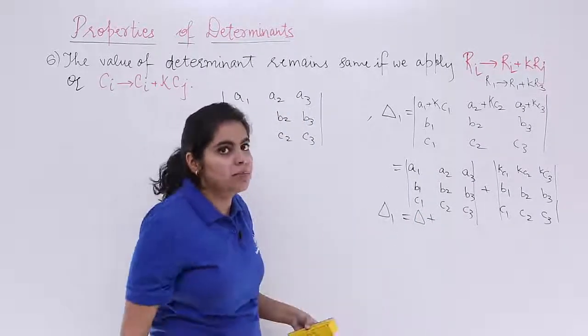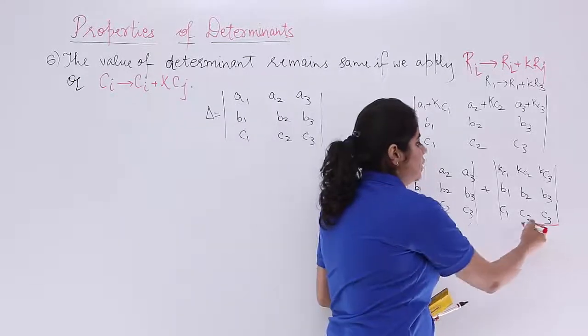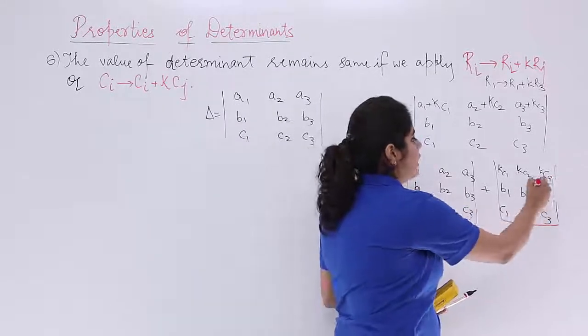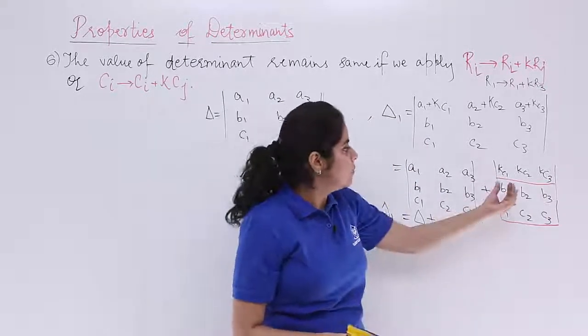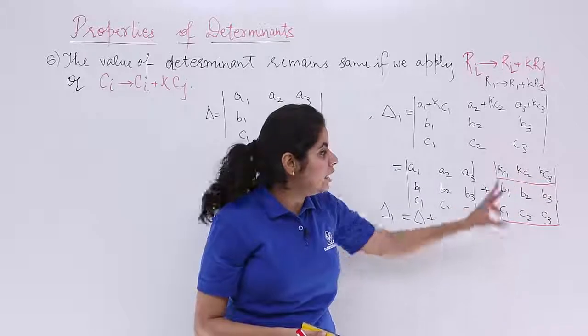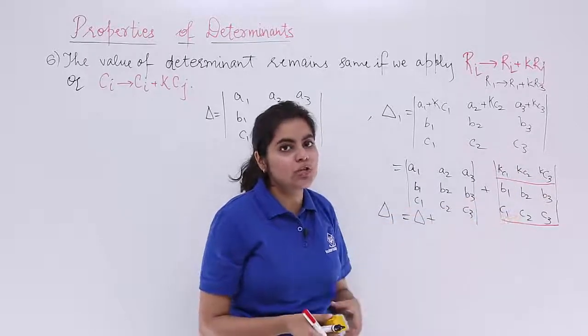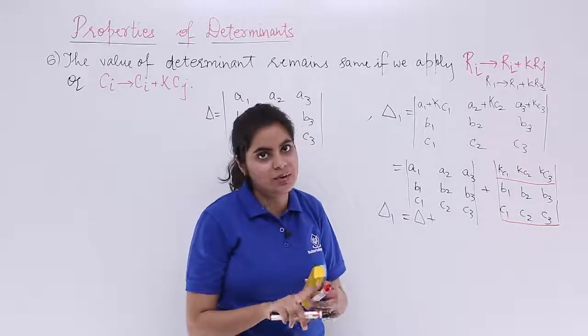Now, if you observe this second determinant, this is row 3, c1, c2, c3. This is row 1, k c1, k c2, k c3. Take out k common, it becomes c1, c2, c3 only. Two rows identical, two rows proportional. The answer to this determinant is 0.